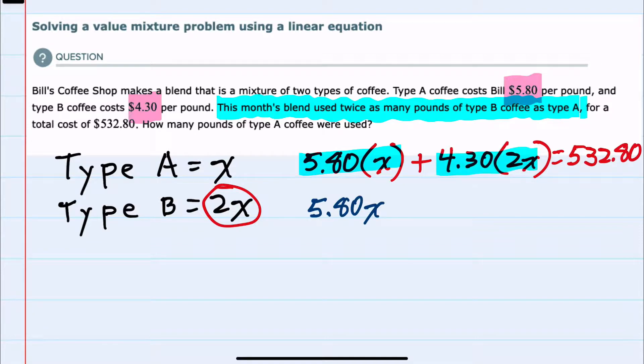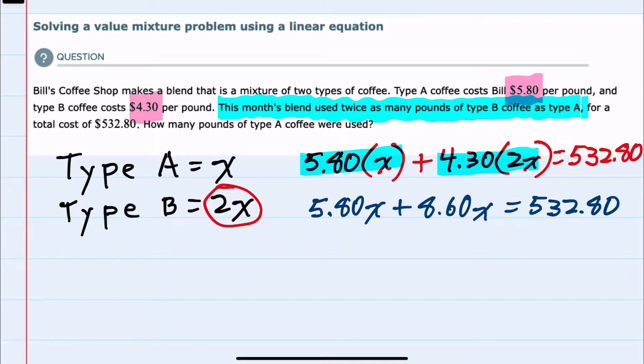And then $4.30 times 2x would simplify to $8.60x equals $532.80.